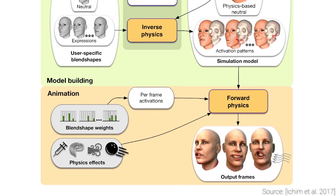The animation step takes information of how the desired target expressions evolve in time and some physics information, such as gravity or wind, and the forward physics unit computes the final simulation of the digital character.